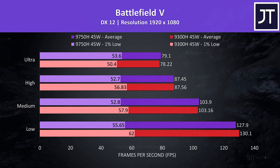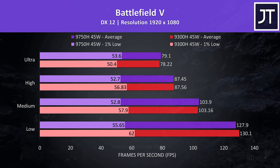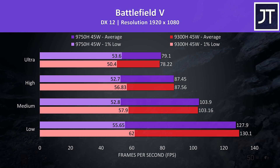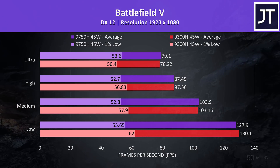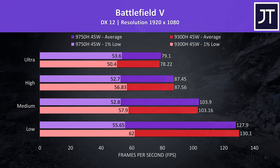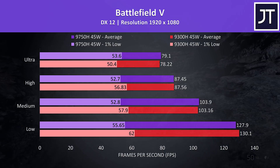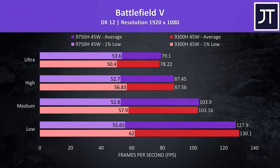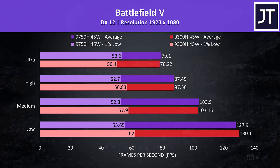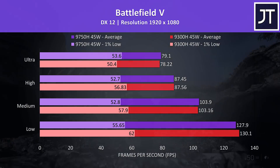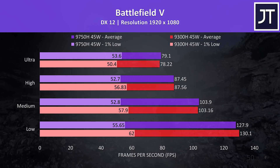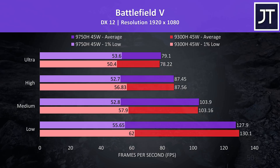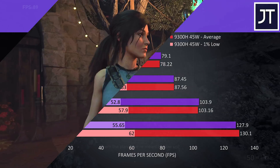Battlefield 5 was tested in campaign mode running through the same section of the game on both machines. The results were quite close here. At ultra settings the i7 was only 1% ahead, which is honestly kind of margin of error anyway. Interestingly the i5 was ahead in 1% low at all other settings, however I have found 1% low performance inconsistent in this title.